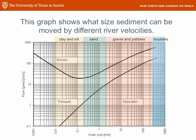Let's look at a particular flow speed and see what happens. This red line marks a flow speed of 30 centimeters per second. At this river velocity, silts and sands are being eroded — plucked out of the ground and picked up. Sand and gravel are being transported. But pebbles, stones, and boulders are too heavy to be moved at this speed, so they are being deposited. You can also look at a particular grain size: sand might be eroded, transported, or deposited depending on river speed. A much faster river can erode sand; a moderate river transports it; a very slow river deposits it.